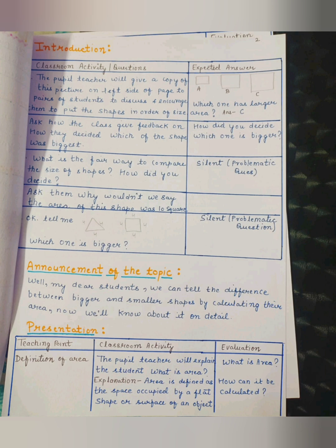Ask them: Why wouldn't we say the area of this shape was 10 square? Tell me. We will draw two shapes: One triangle and one square, each of size 4 cm. And ask them which one is bigger? Expected answer: Of course this is a problematic question, so no answer will be expected.